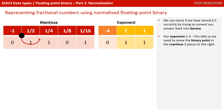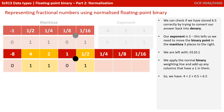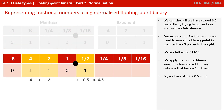We can check if we stored 6.5 correctly by trying to convert our answer back to denary. Our exponent is 3, telling us we move the binary point in the mantissa three places to the right. We're left with 0110.1. We apply our normal binary weighting line, add up the columns with 1s: 4 plus 2 plus a half equals 6.5, so we can be sure we've stored that correctly.